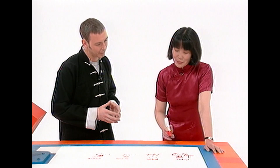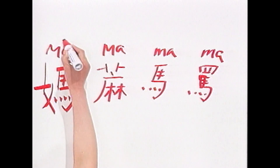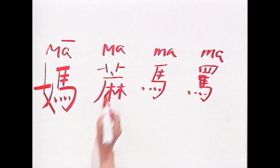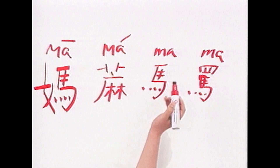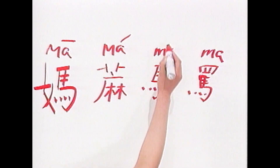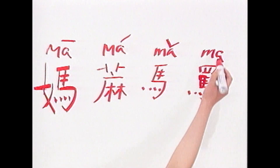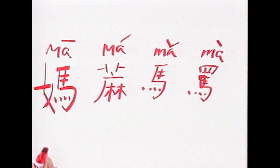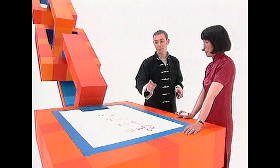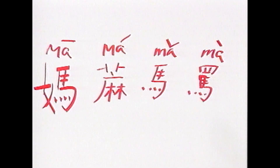You see, Chinese is a tonal language, and the meaning of a word depends on whether your voice is rising or falling or not. For this one, for example, it's a flat tone — it's 'ma'. And that one — 'ma', the word for horse — it's falling and then rising. The last one, to swear, it's a falling. So it's ma, ma, ma, ma.